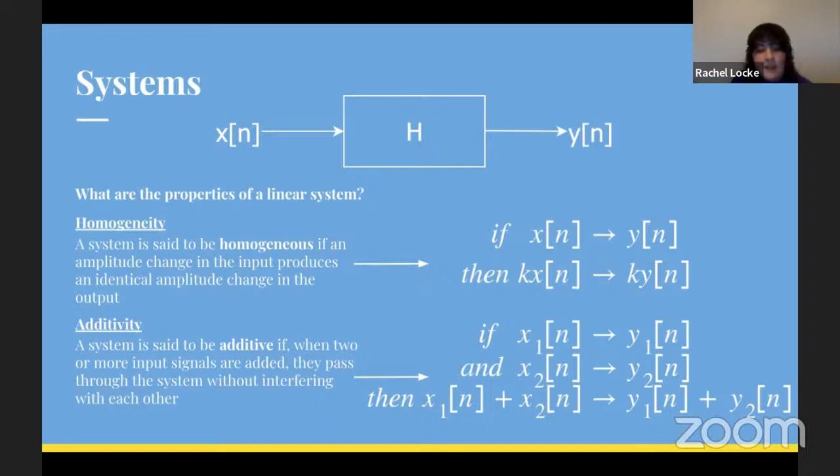The second property we have to have for linearity is additivity. A system is said to be additive if, when two or more input signals are added, they pass through the system without interfering with each other. That is, if an input signal x₁[n] produces an output signal y₁[n] and an input signal x₂[n] produces an output signal y₂[n]. If we add x₁[n] with x₂[n] and feed it as an input into a system, we want to receive the output y₁[n] plus y₂[n].